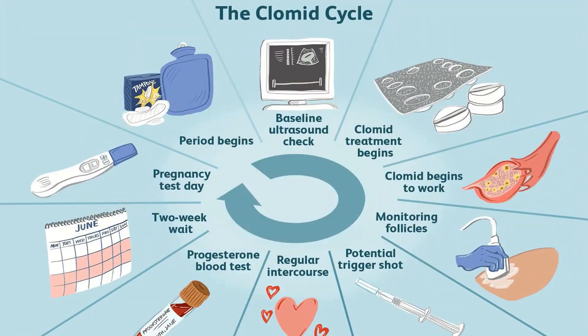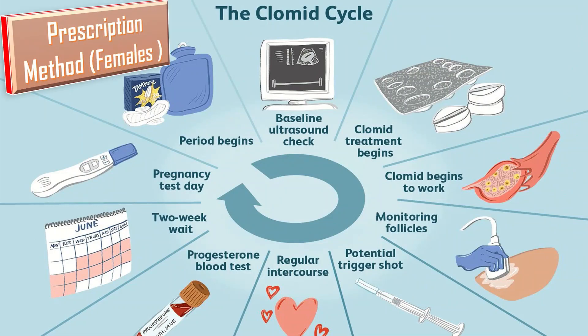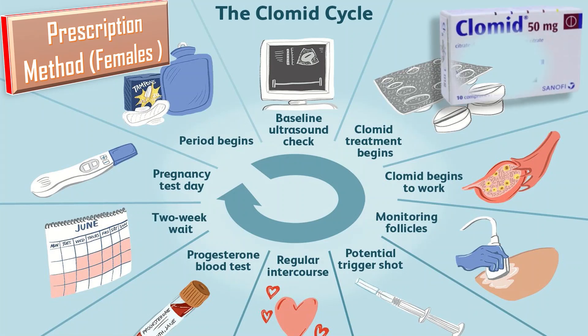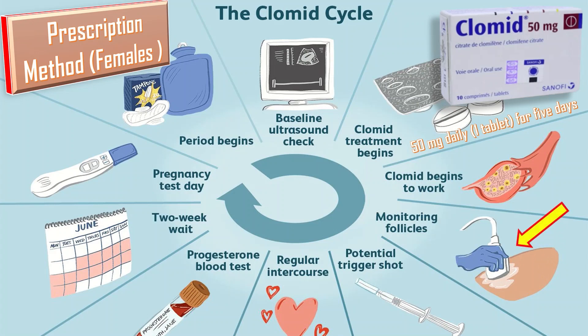Now we will talk about the prescription method of tablet clomiphene citrate for female infertility. Clomiphene citrate is available as a 50 mg oral tablet. For ovulation induction, 50 mg tablet is given daily — one tablet every day — starting from day 2, then on days 3, 4, and 5 of the menstrual cycle. Follicular tracking is then done by an ultrasound scan arranged on day 10 and then on day 12 of the cycle.